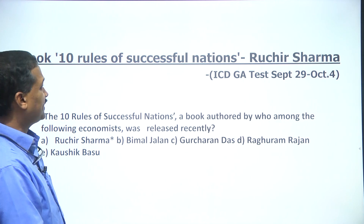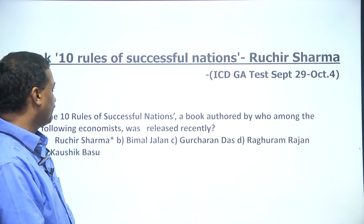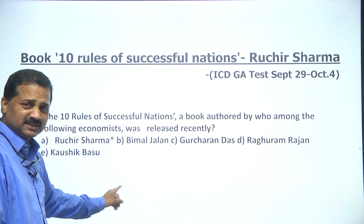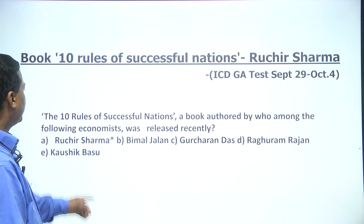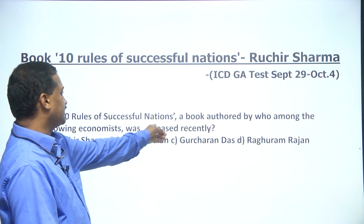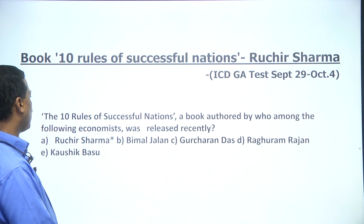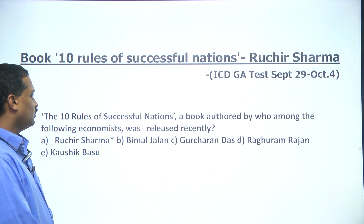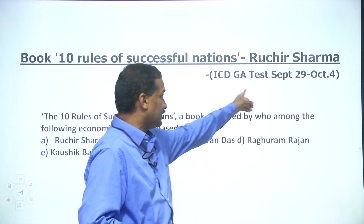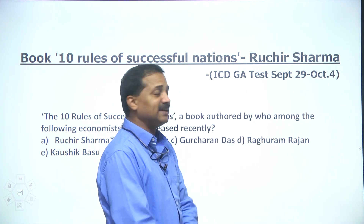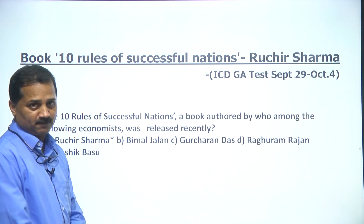The book '10 Rules of Successful Nations' by Ruchir Sharma — I gave this as a question: 'A book authored by which among the following economists was released recently?' This came up in my test on September 29–October 4. The answer is Ruchir Sharma.